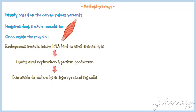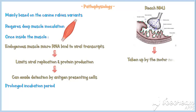Because of the slow replication rate, the virus spends a prolonged incubation period before symptom onset. Once enough viral particles are made, they reach the neuromuscular junction. The virus is then taken up by the motor neuron of the neuromuscular junction and propagates along the neuronal axon towards the spinal cord. This is also known as the retrograde transport of the virus.